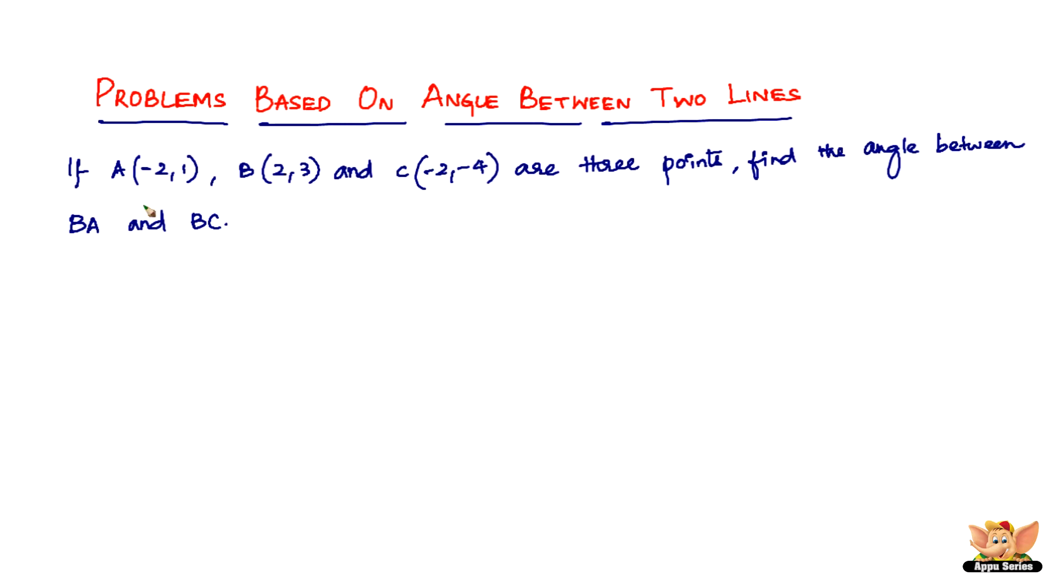So we've got three points. To find the angle, we need the slopes of both the lines. So the two lines here are BA and BC. So let's find the slopes of BA and BC.